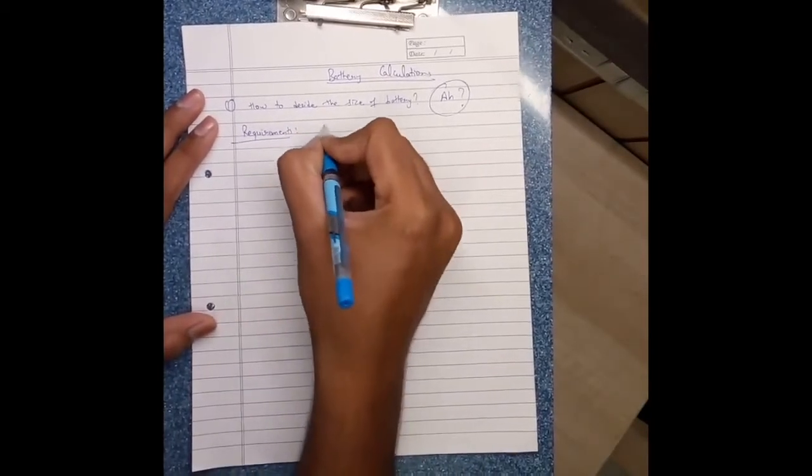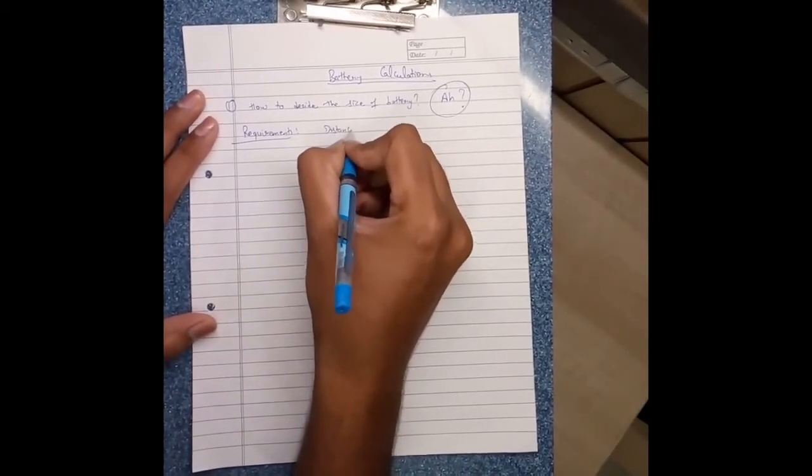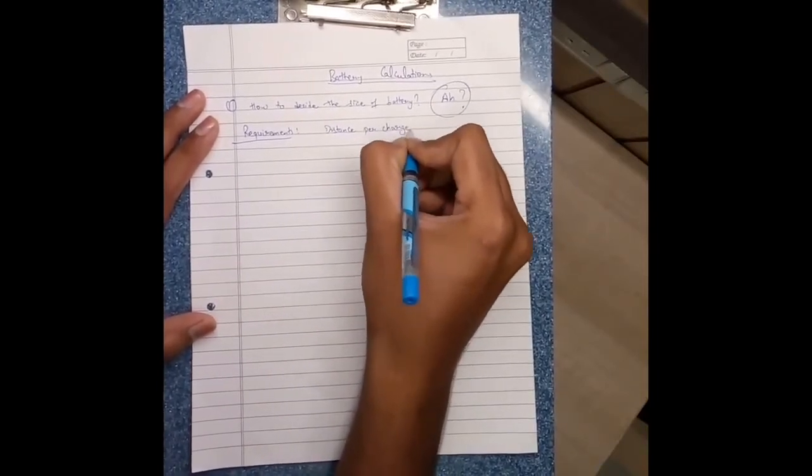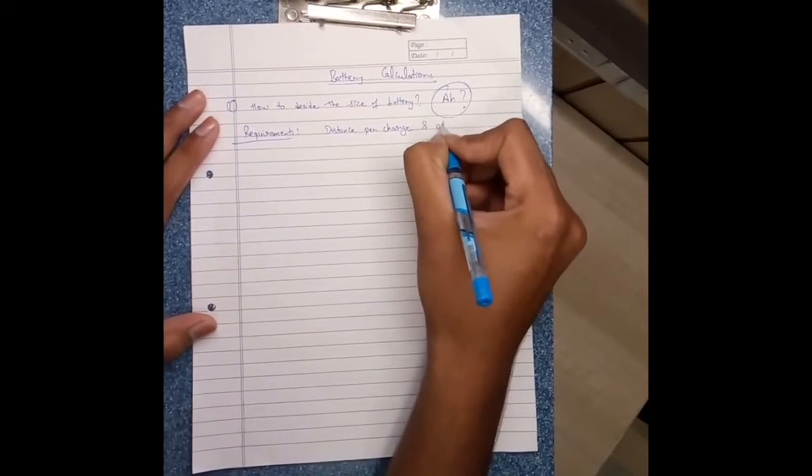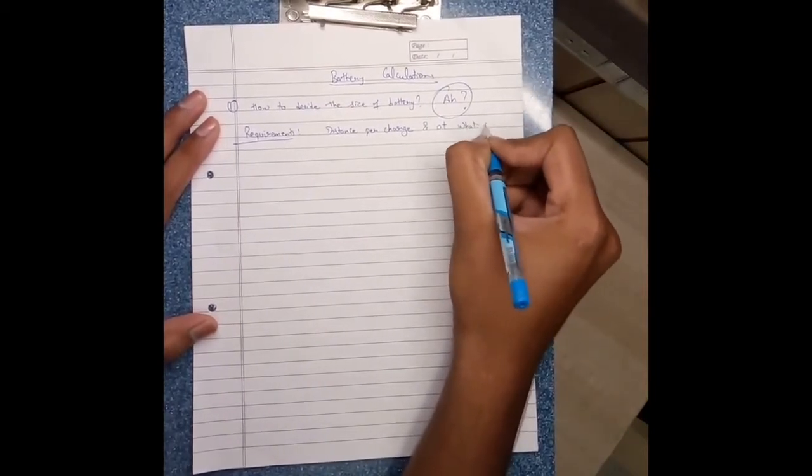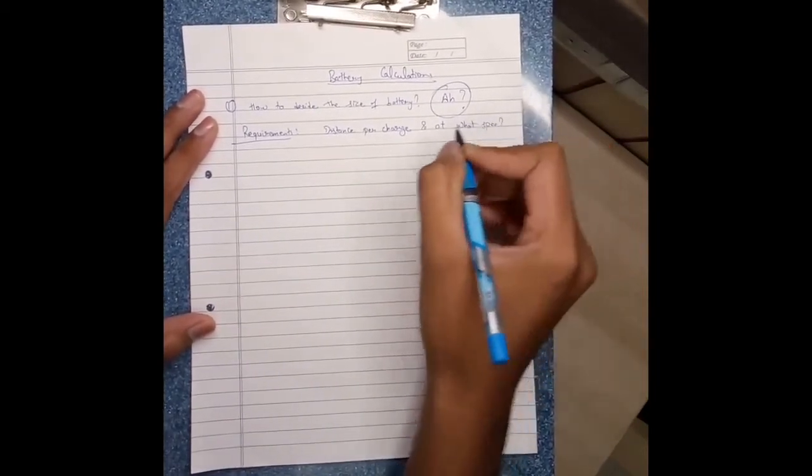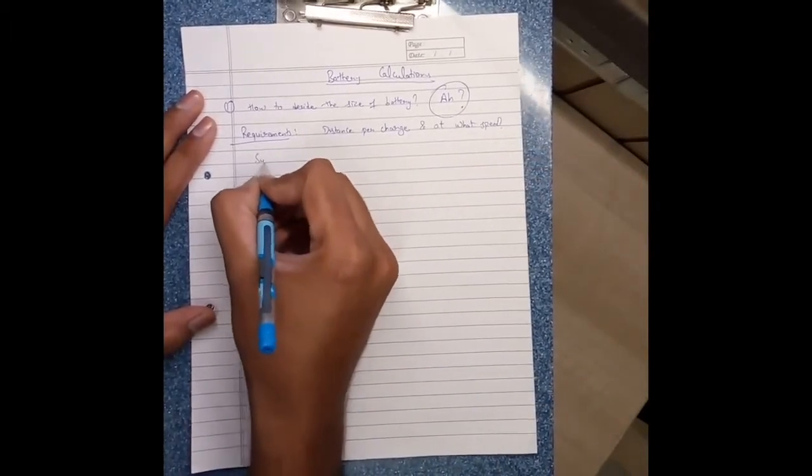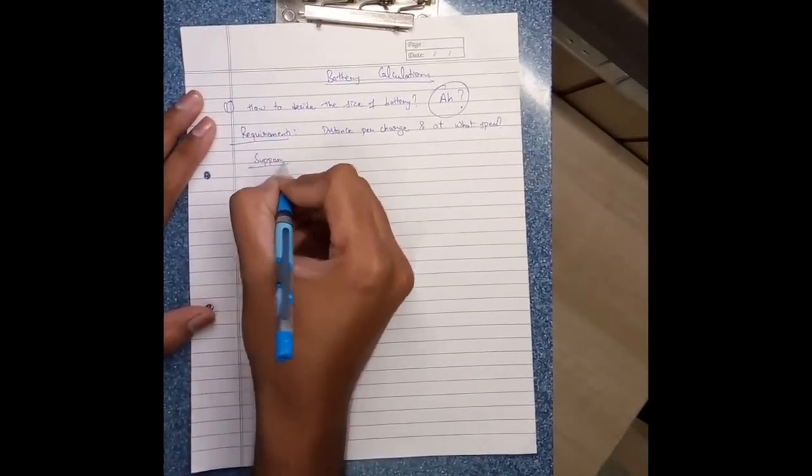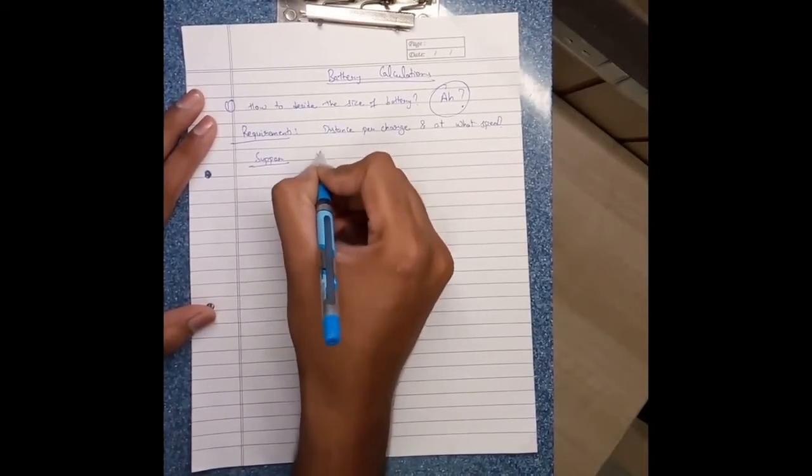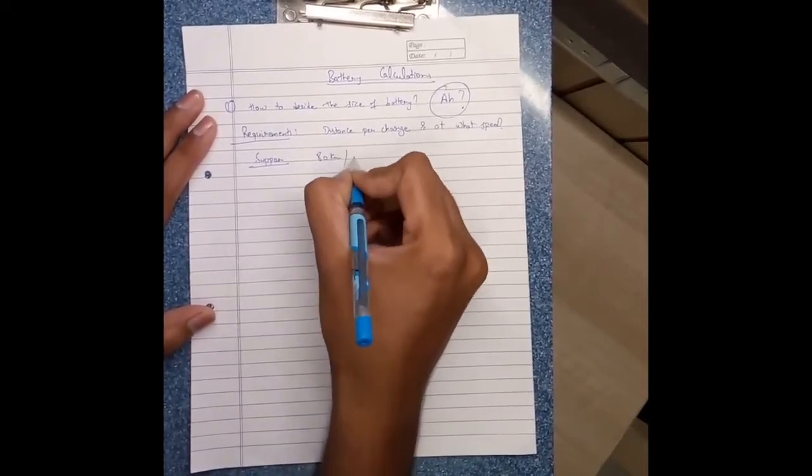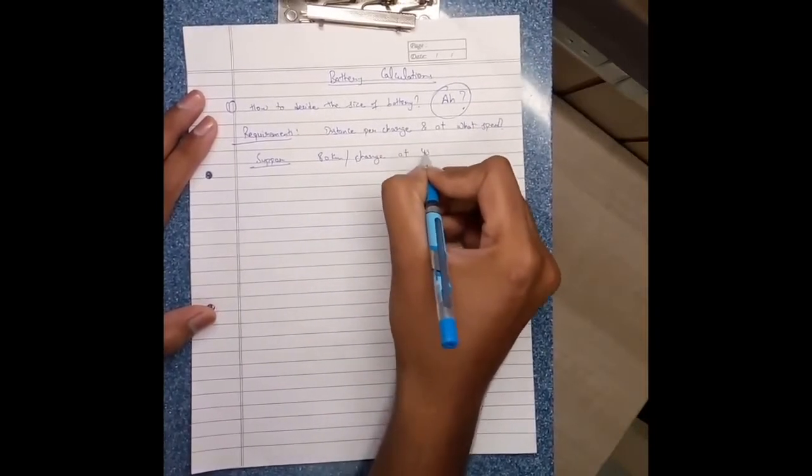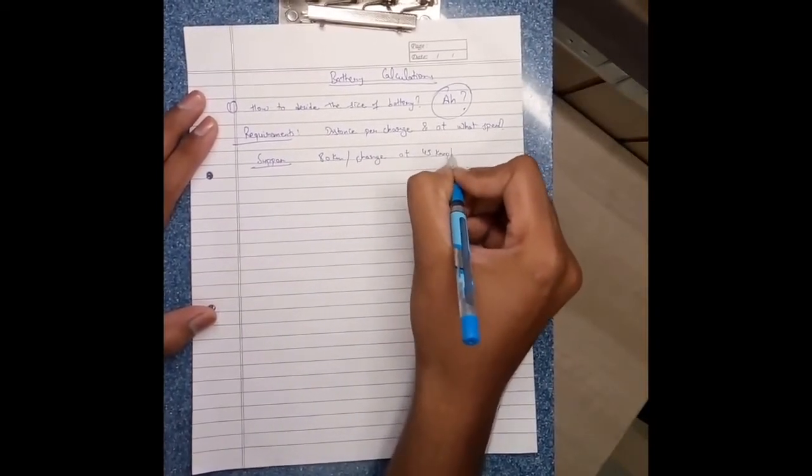Requirements: distance per charge and at what speed. Suppose I require 80 km per charge at 45 km per hour.